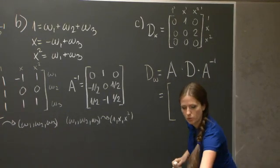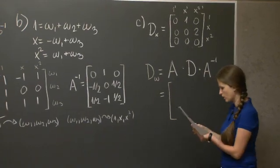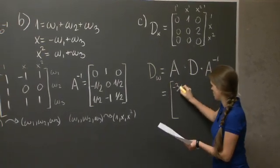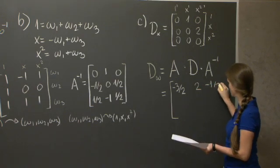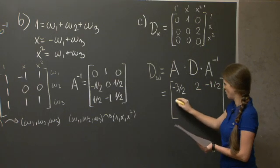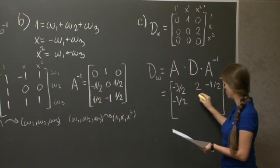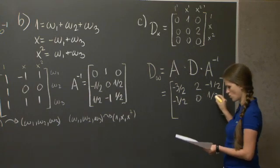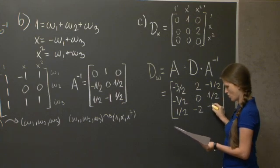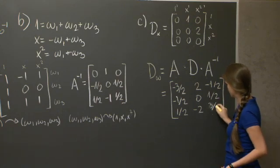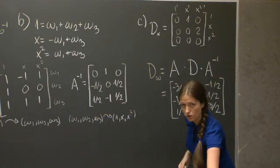So it's multiplication of three matrices. We have all three. Matrix multiplication is easy. And my oracle, again, says that this should be minus 3 over 2, 2 minus 1 over 2, minus 1 over 2, 0, 1 over 2, and 1 over 2, minus 2, 3 over 2. And that solves the problem.